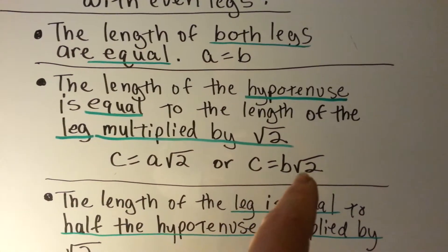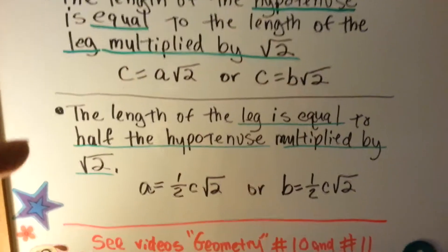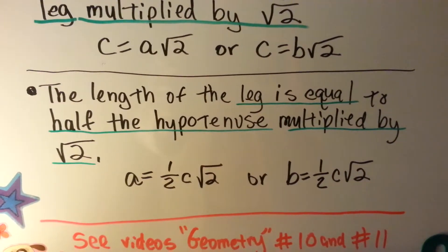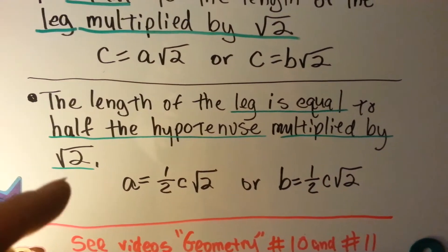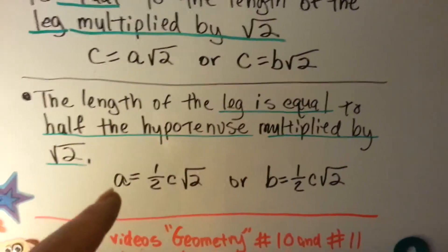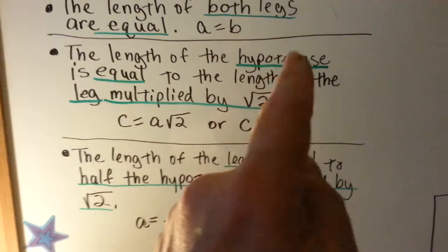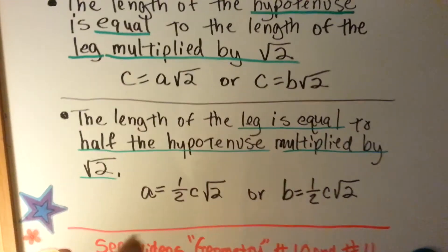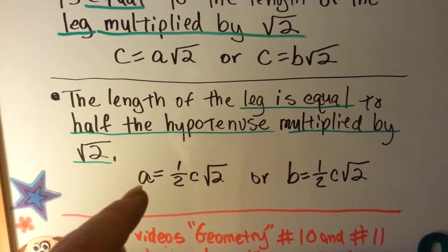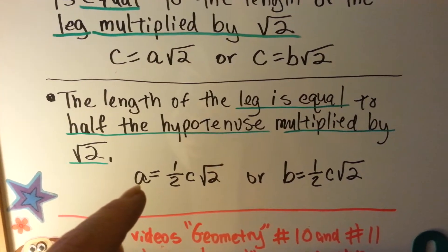C is equal to B times the square root of 2. The length of the leg is equal to half the hypotenuse multiplied by the square root of 2. So, this was the length of the hypotenuse. This is the length of the leg.